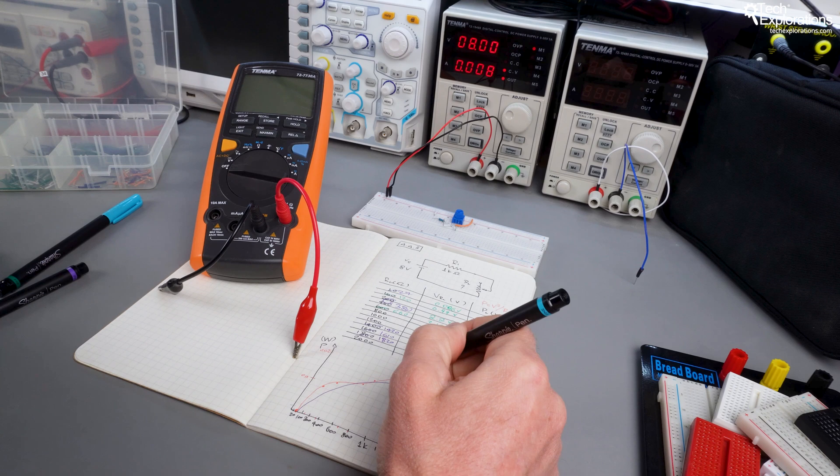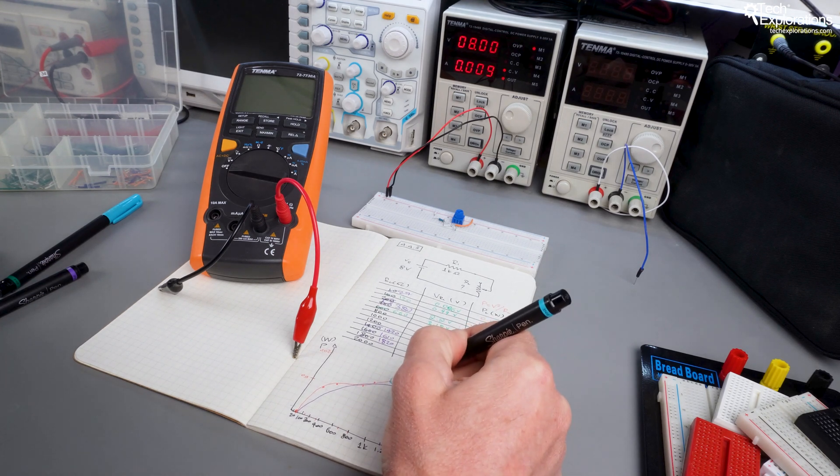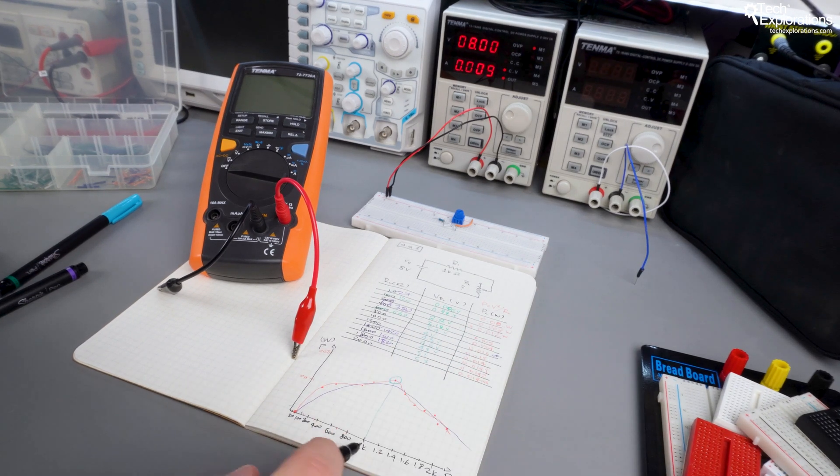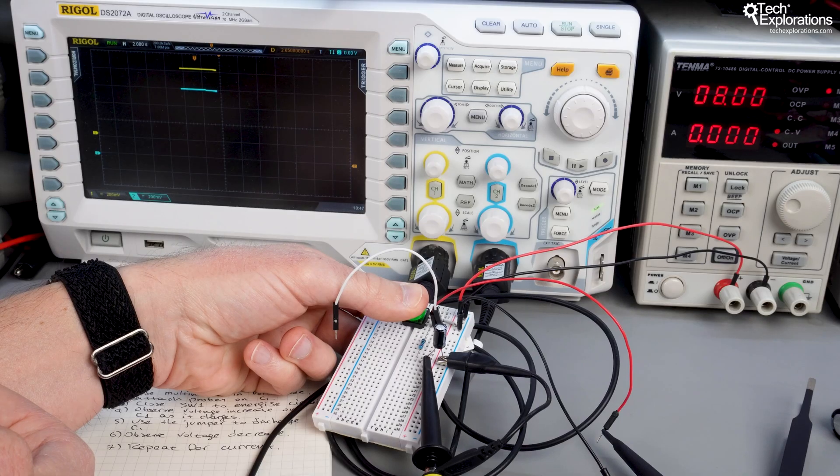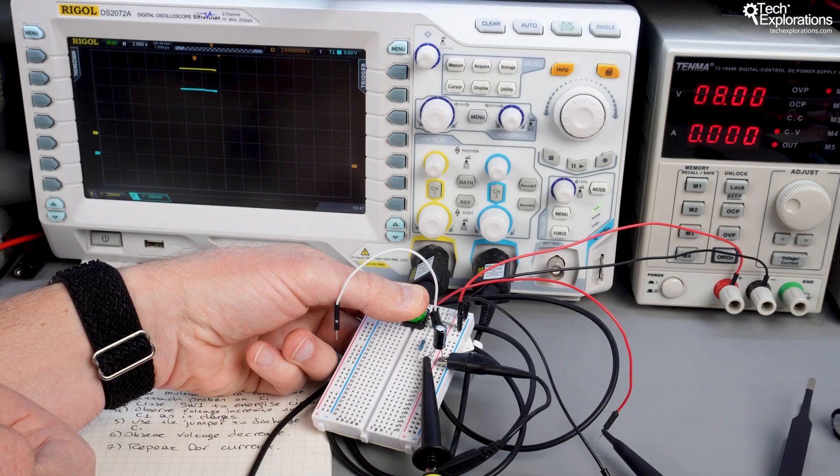You'll set up basic circuits using resistors, capacitors and jumper wires to explore how current and voltage behave in a real-world environment. You'll learn how to connect components correctly and troubleshoot your setups.